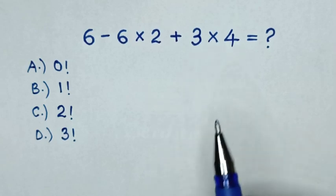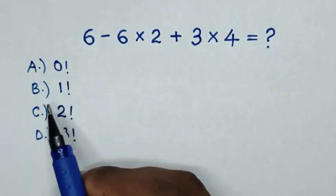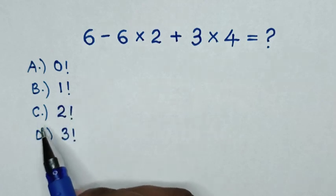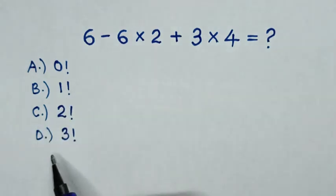Select between the answers: A, 0 factorial; B, 1 factorial; C, 2 factorial; D, 3 factorial.